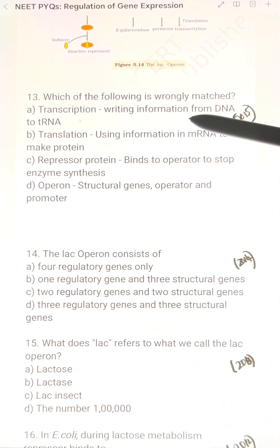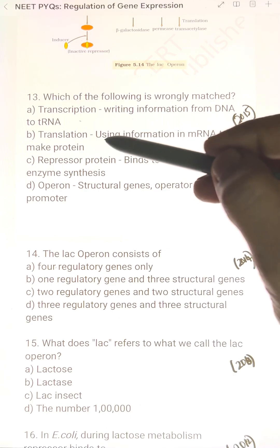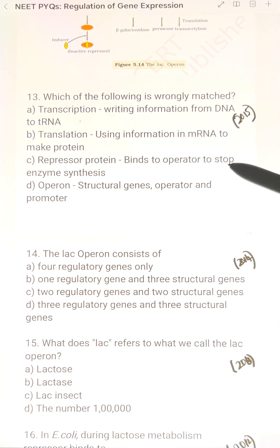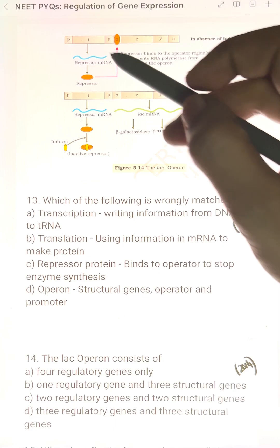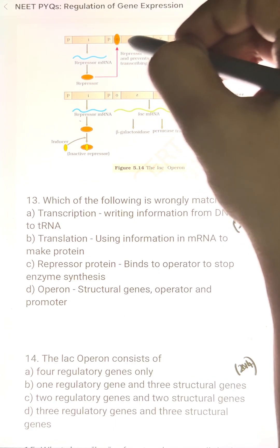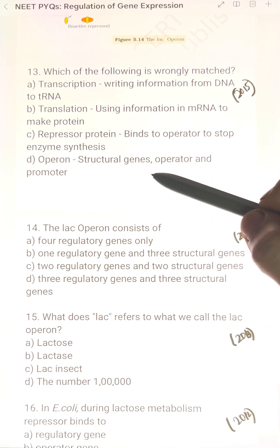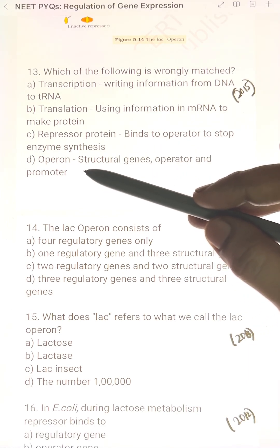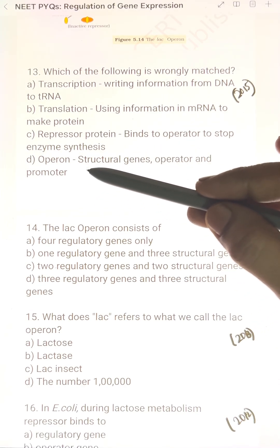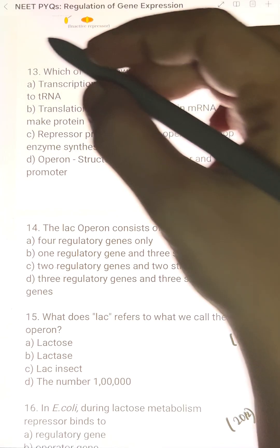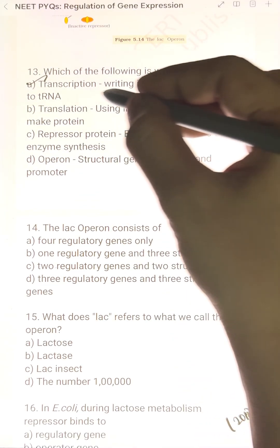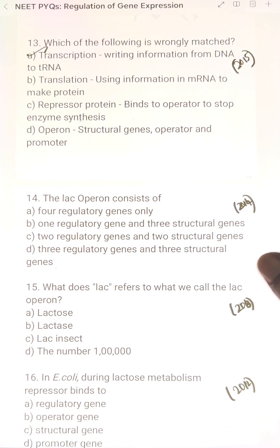Then translation using information in mRNA to make protein, this is correct. Repressor protein binds to operator to stop enzyme synthesis, this is right. Operon has structural genes, operator, promoter and regulatory gene. But transcription writing information from DNA to transfer RNA that is wrong.